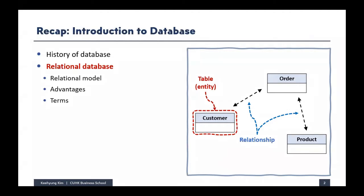I briefly talked about the history of databases, and I mentioned that in the first part of our lecture — basically the first half of our class — we are going to focus on relational databases. We briefly talked about the relational model: what the basic idea is and how the relational model works. I also talked about some advantages and mentioned terms like PK for primary key and FK for foreign key.